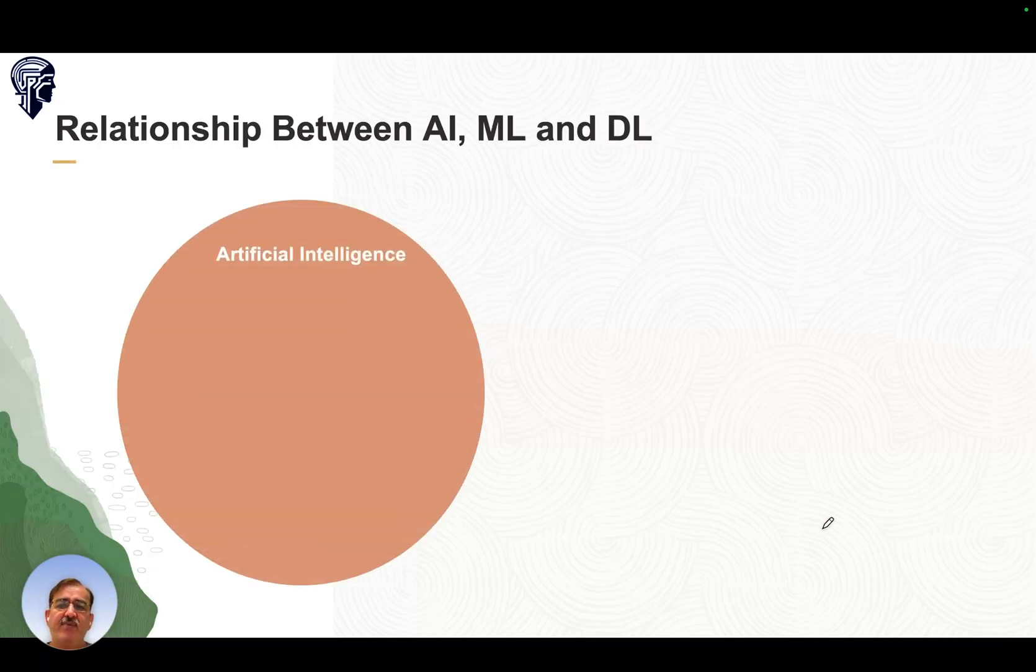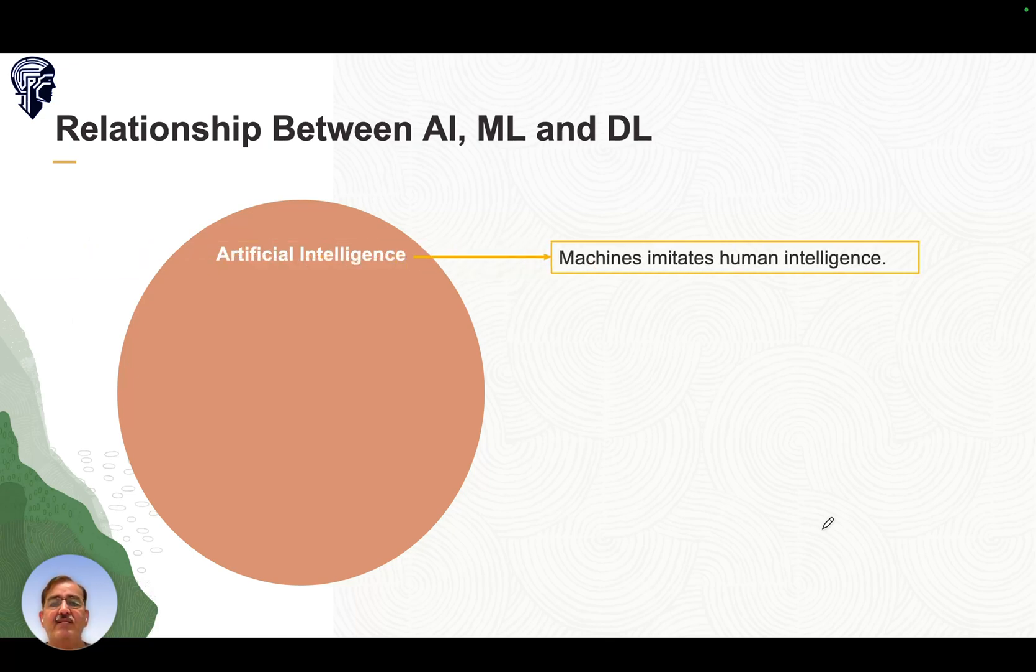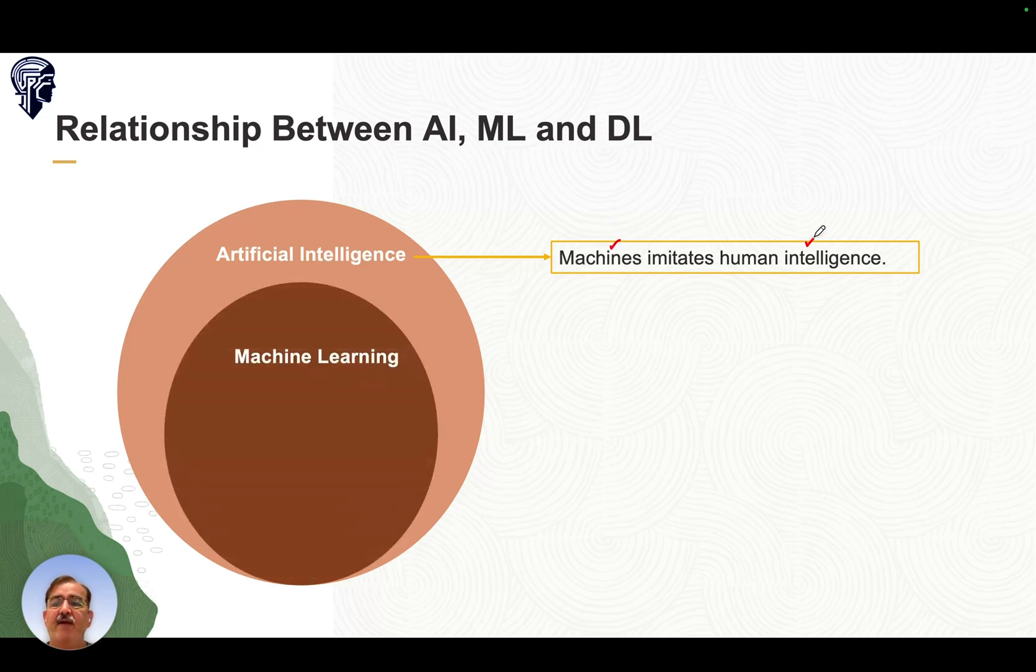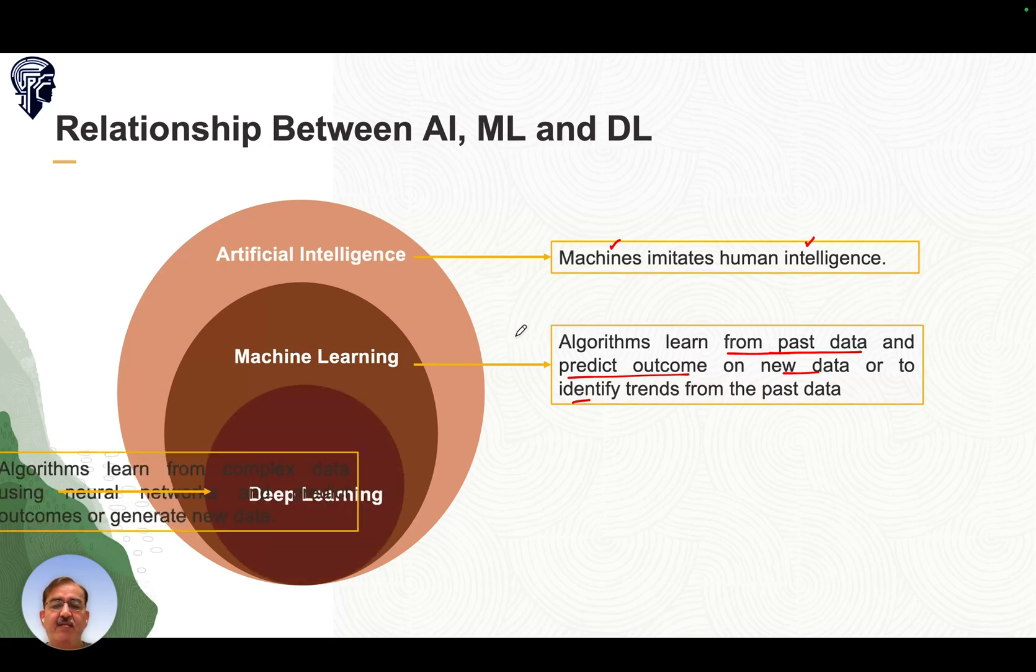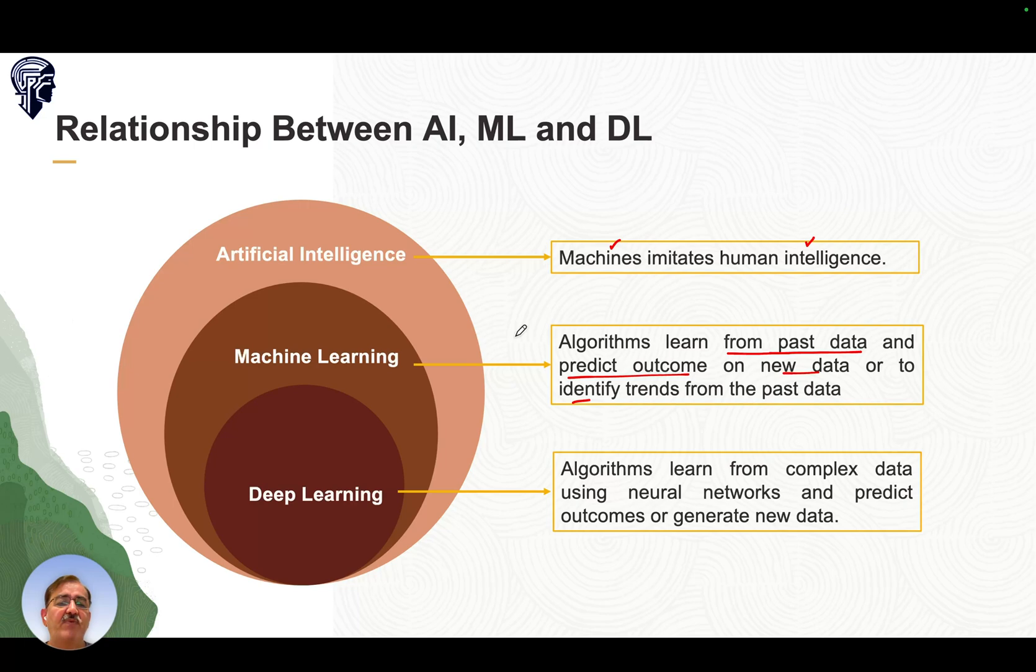The relationship between artificial intelligence, machine learning, and deep learning: Artificial intelligence is where machines imitate human intelligence. Machine learning is where algorithms learn from past data and predict outcomes on new data or identify trends. Deep learning is where algorithms learn from complex data using neural networks to predict outcomes or generate new data.